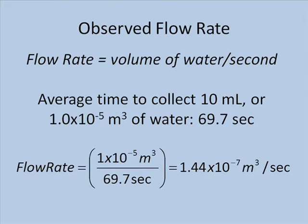was 69.7 seconds. That means our flow rate will be equal to 1 × 10⁻⁵ cubic meters divided by 69.7 seconds, or 1.44 × 10⁻⁷ cubic meters per second.